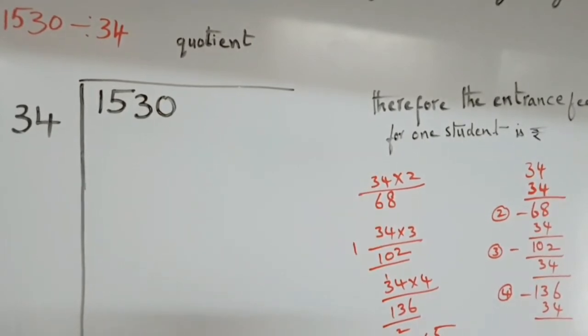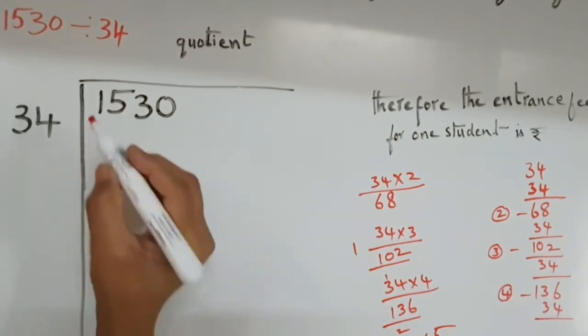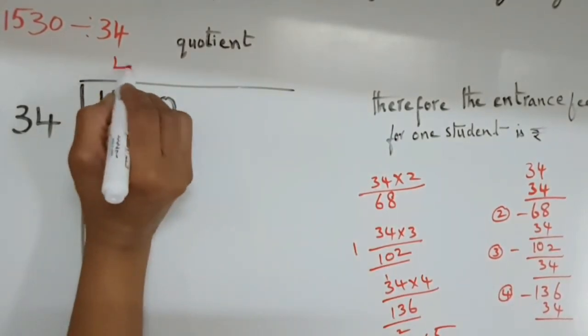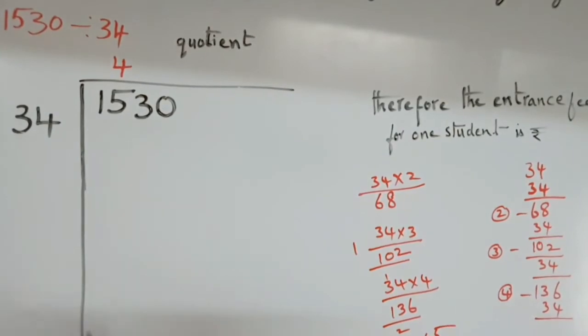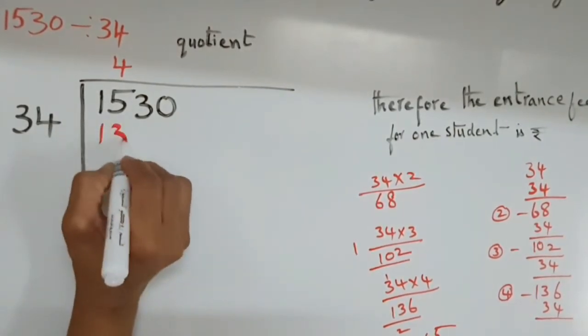We need 170. No. Not possible. So, 163. How many 34s in 153? 4. 4 times 34 are 136.